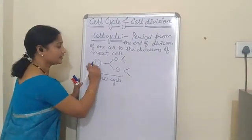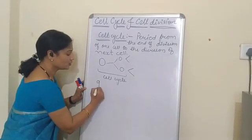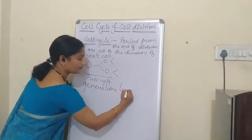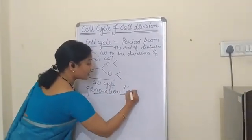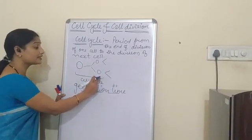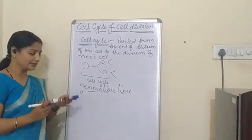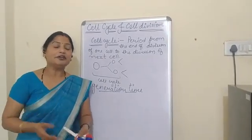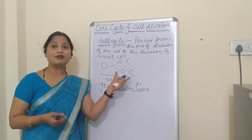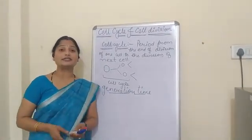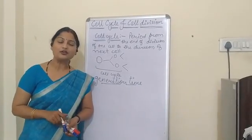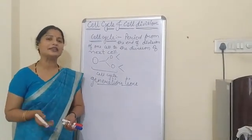The time taken during this cell cycle is known as generation time — the time required for a complete cell cycle. Different organisms may take different times for their cell cycle. In case of eukaryotic cells, it may take 24 to 30 hours for complete division, but in case of prokaryotic cells, they may take only 20 minutes or half an hour.